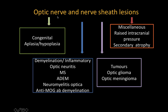The optic nerve is the second cranial nerve and it's special because it's actually the extension of the brain, hence all the diseases seen in the brain are also seen to involve the optic nerve. I have divided the optic nerve pathologies into two categories: congenital, which includes aplasia and hypoplasia; demyelination or inflammatory processes including optic neuritis, multiple sclerosis, ADEM, neuromyelitis optica, and anti-MOG associated demyelination; tumours including optic glioma and optic meningioma; and miscellaneous pathologies including increased intracranial pressure and secondary atrophy.